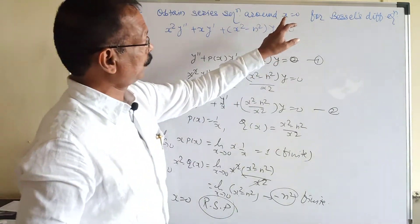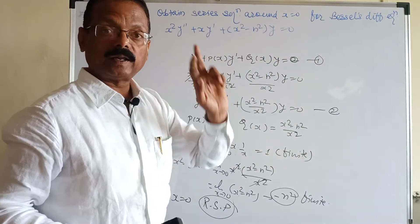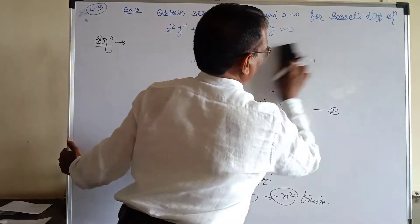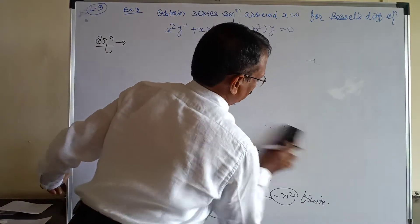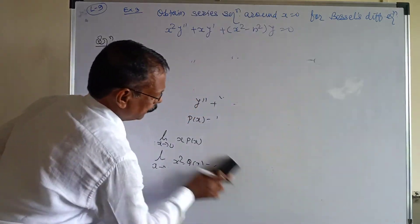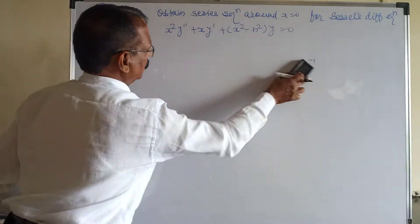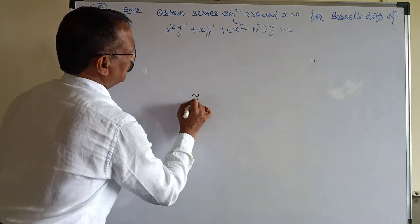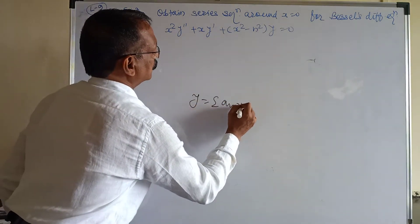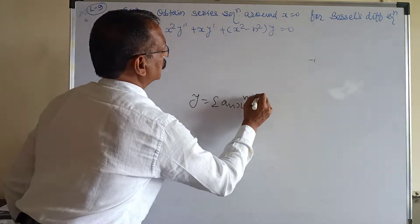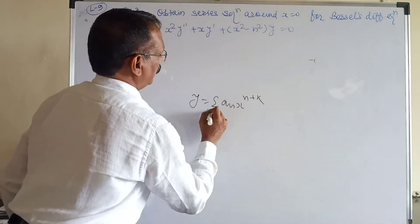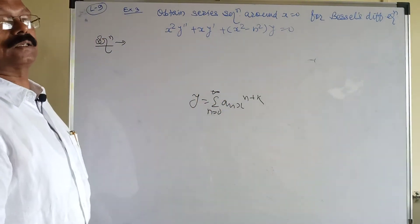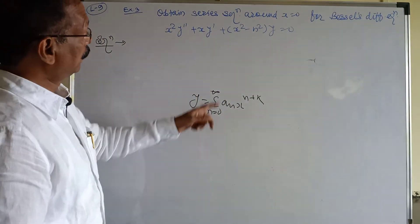Since x = 0 is the regular singular point, the power series solution is y = Σ aₘ x^(m+k), where m runs from 0 to infinity. Note: because the given equation already contains n, we replace the summation index n with m to avoid confusion.